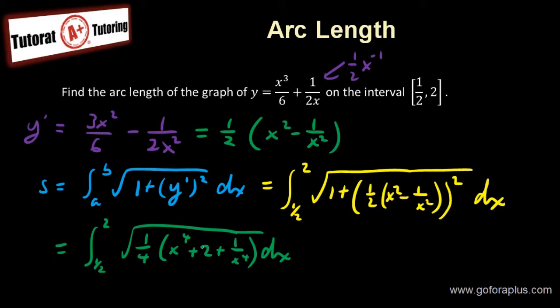And what do you know? This is a perfect square. So perfect square, then if you have a square root, that will make your life much easier. So there's no more square root. I'll take it off. So this is going to be 1 half x squared plus 1 over x squared dx.